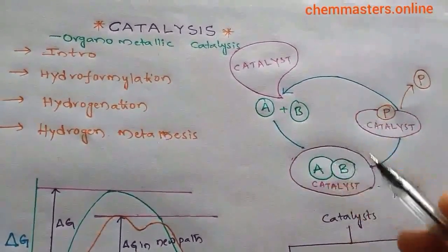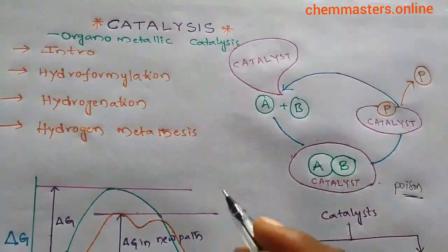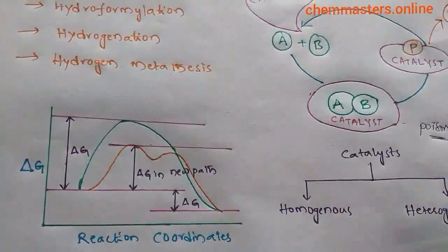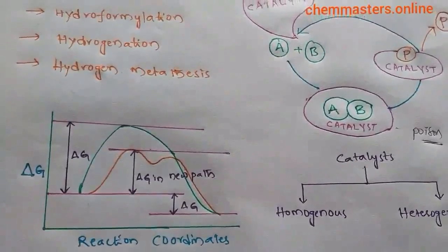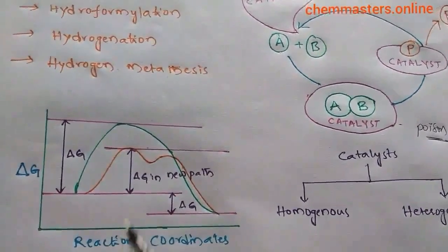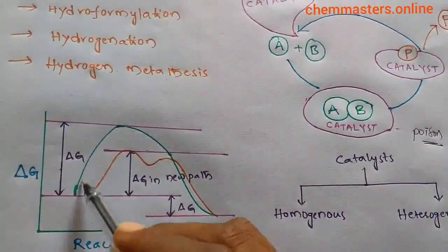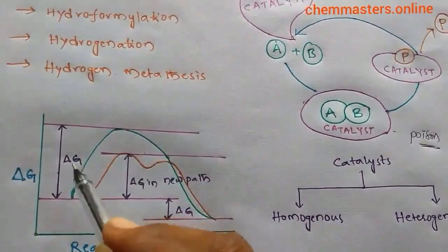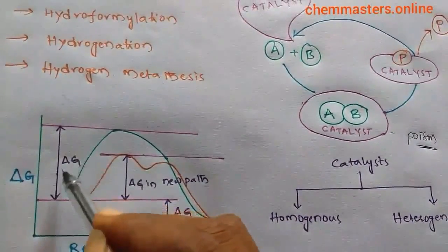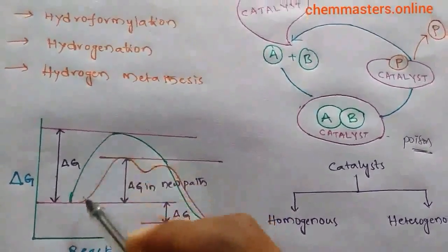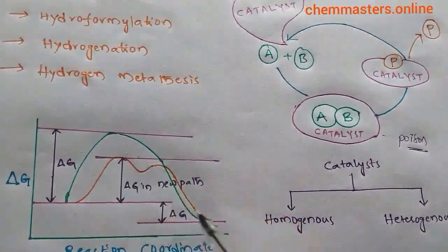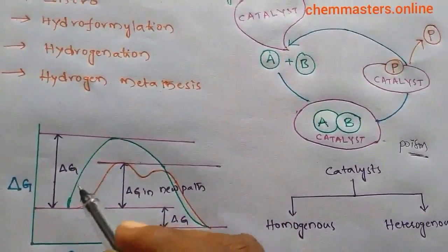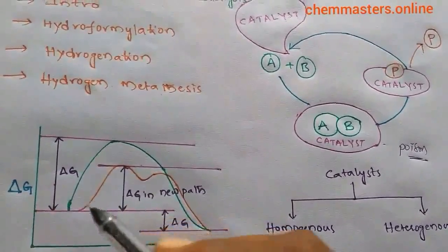The catalyst discussed here is a positive catalyst, meaning it increases the rate of reaction. Observing a graph of Gibbs free energy versus reaction coordinates: looking at the green path, the activation energy Delta G‡ is high. This represents the reaction without a catalyst, which requires high activation energy and therefore takes more time.